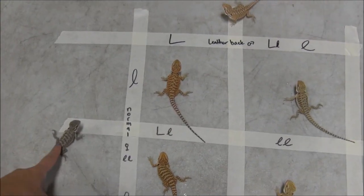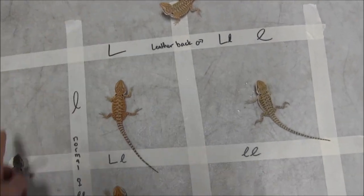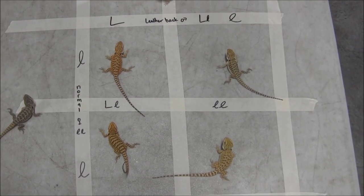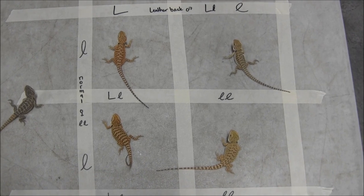So, if these were adults and not babies, you would have your leatherback to normal. And about half the babies that came out would be leatherback and the other half would be normal.